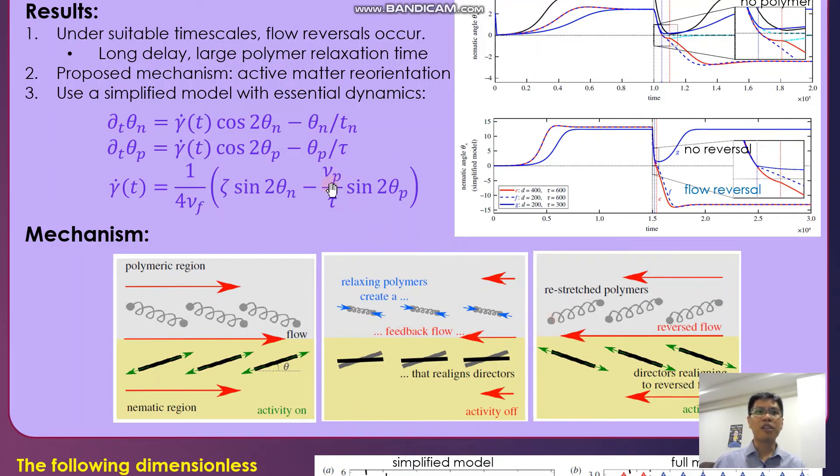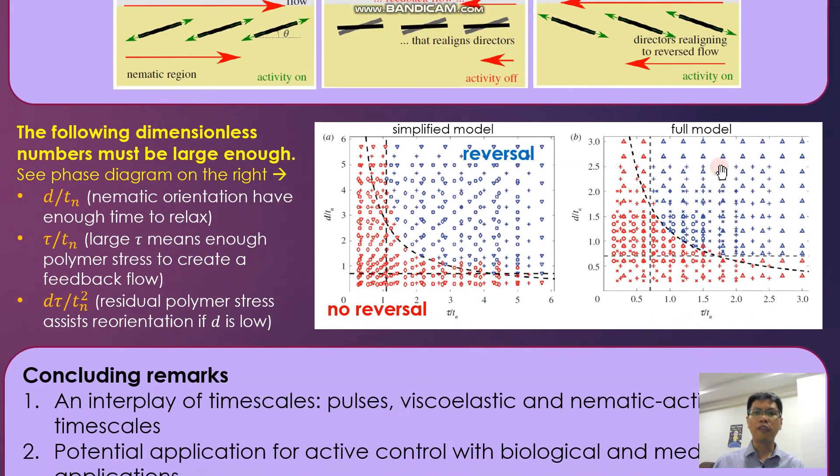Three essential timescales should be considered: how long the delay is, and how fast the nematic directors and the polymers relax. A simpler model with these timescales reproduce the phenomenon as well as the phase diagram of dimensionless numbers, though qualitatively but with amazing agreement.